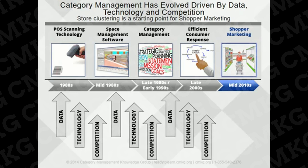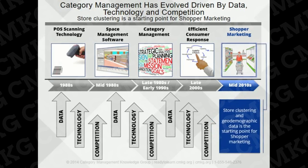At the same time, the market has become more fragmented due to greater shopper diversity and new competition emerging across channels, including online. As a result, more new category management challenges have been exposed and new opportunities revealed. Store clustering and geodemographic data analysis is really the starting point for understanding shopper marketing, or shopper insights.